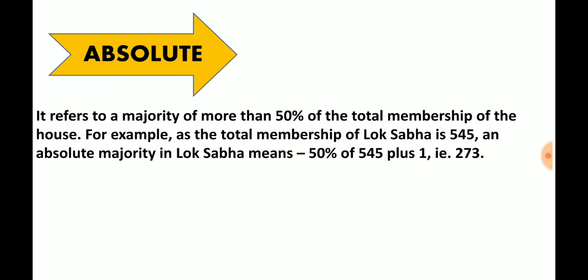So for absolute majority, let's take the total membership of 545. That means more than 50% of the members — that means 273 members. Please keep in mind: absolute majority is used to determine the stability of the government. Absolute majority is important for this reason.